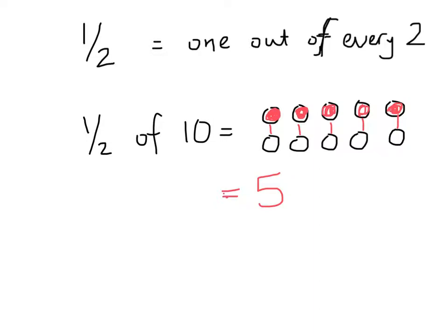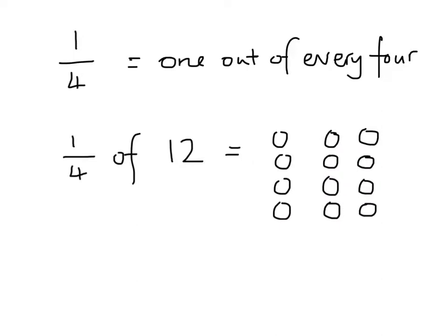The principle — the idea of finding one out of every — is very helpful for finding fractions of numbers, regardless of what the fraction is. Let's try another example: a quarter. That's one out of every four.